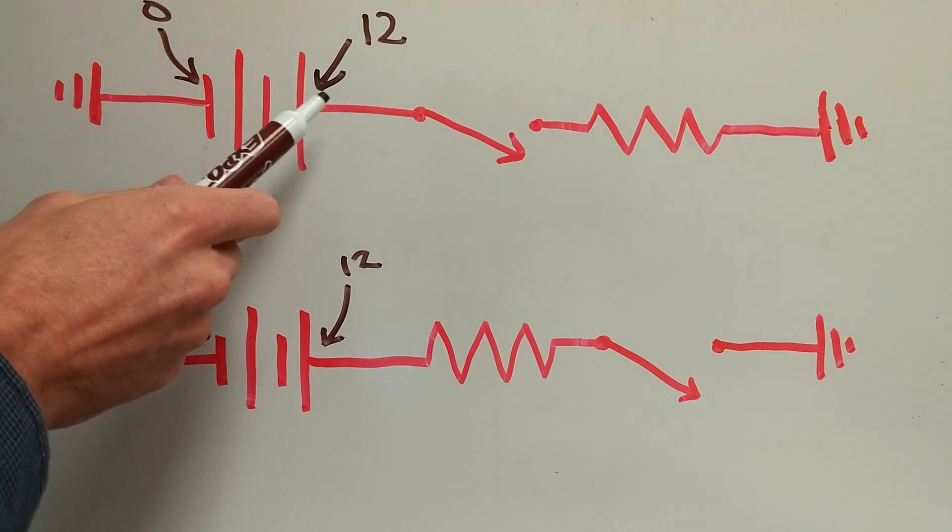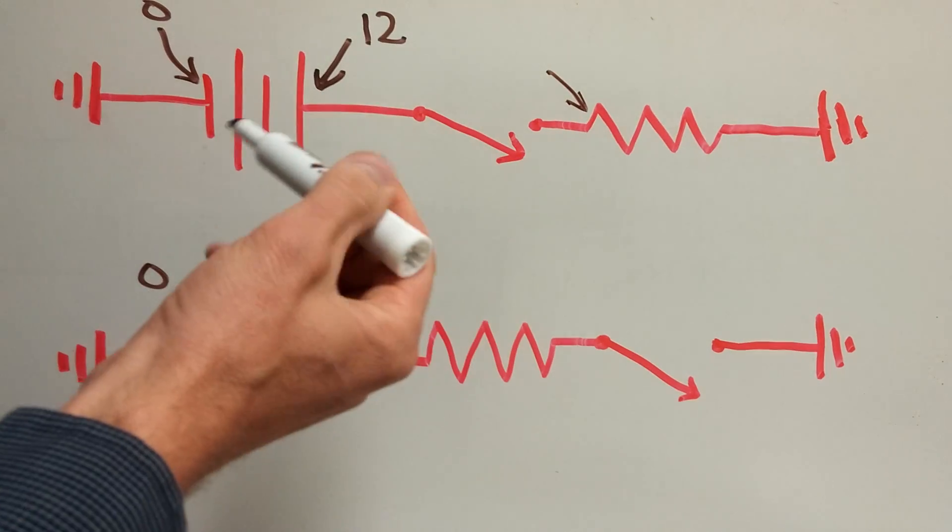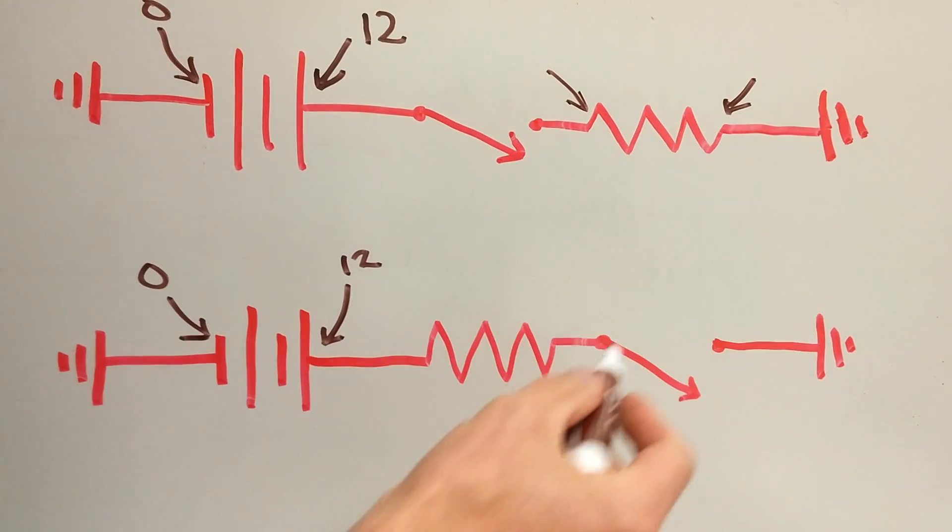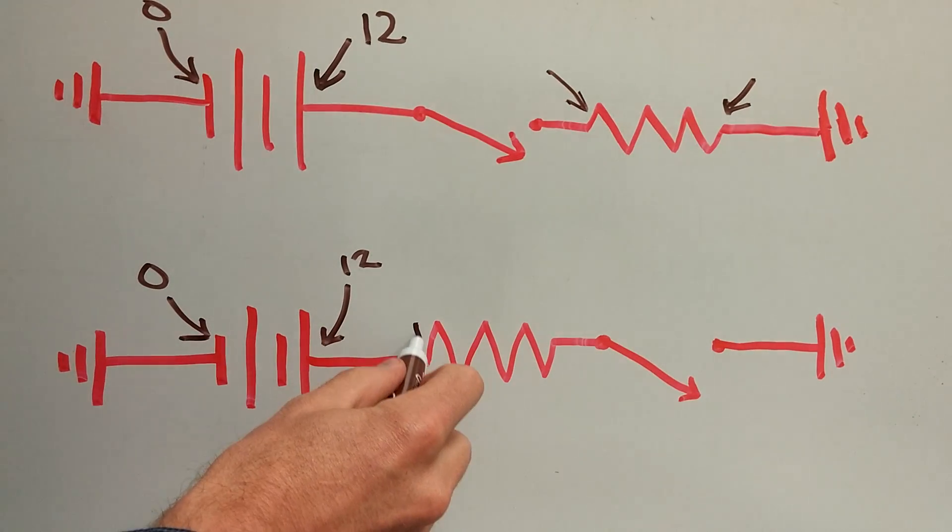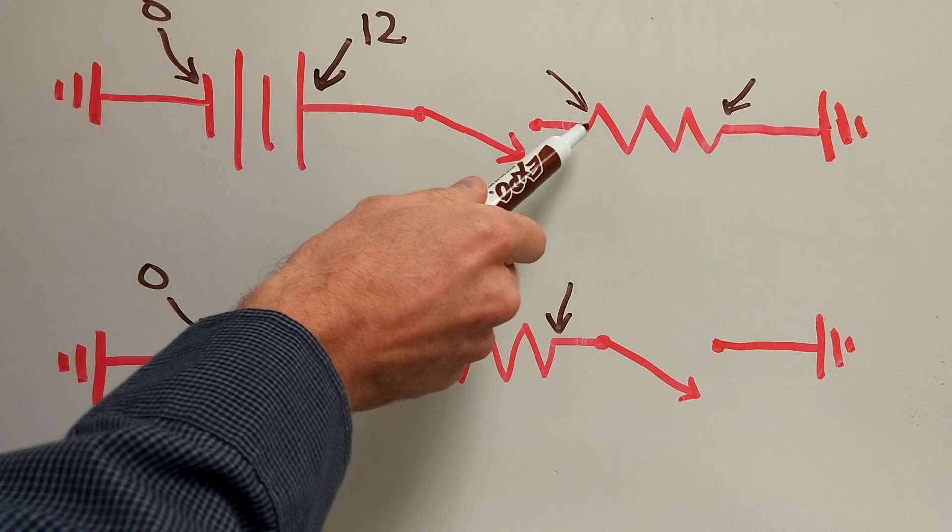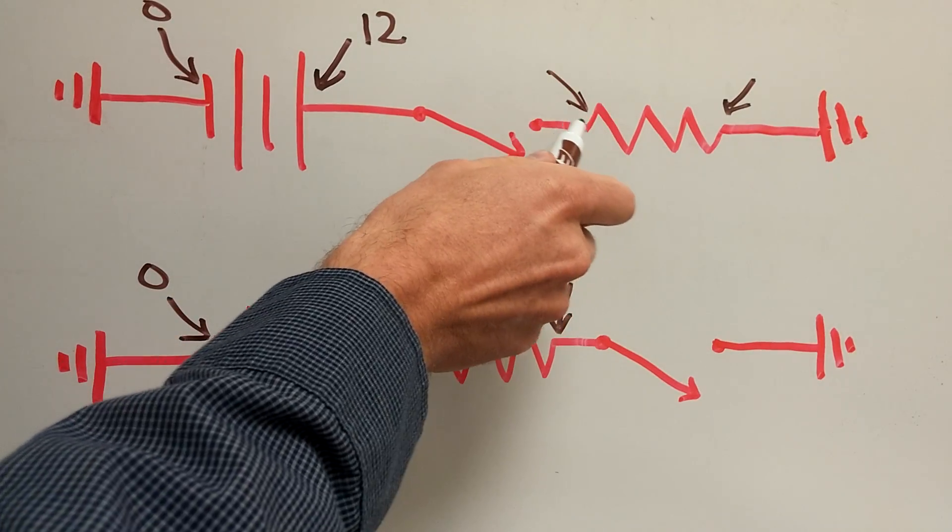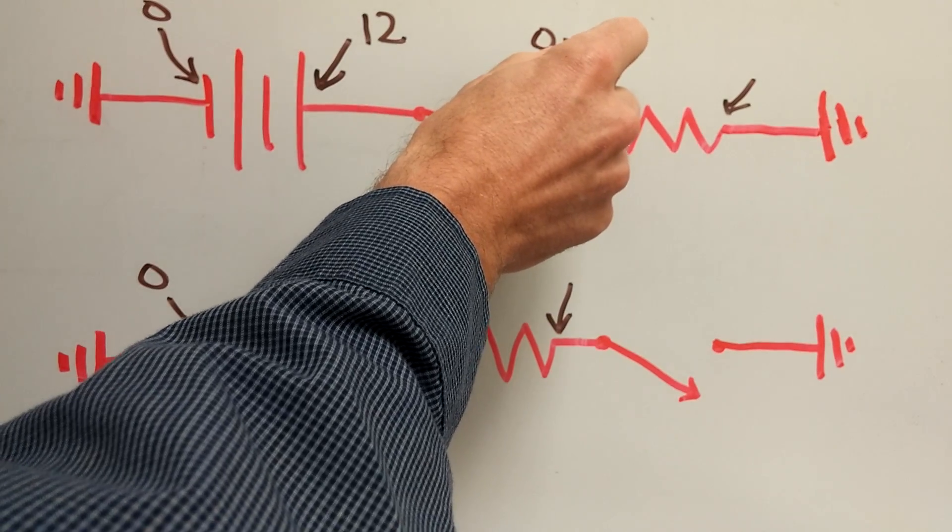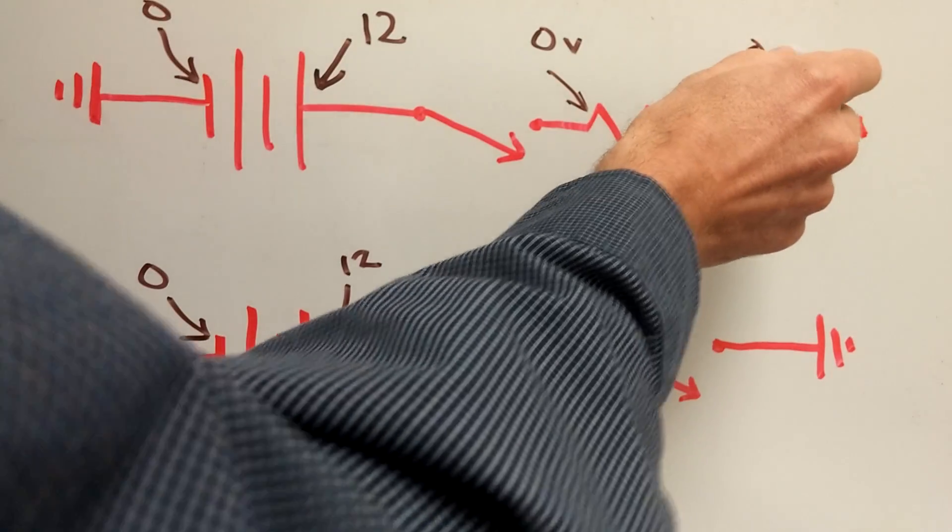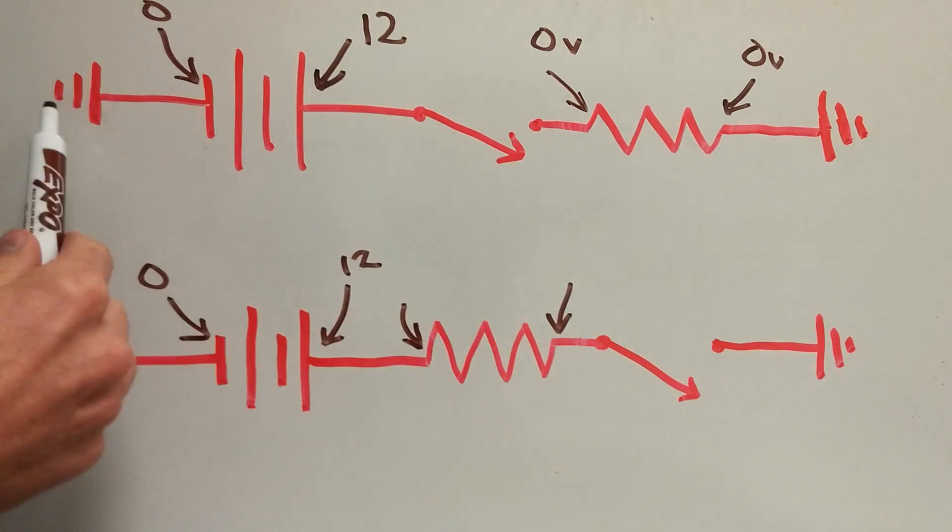Now what changes is I would come over here and I would say, well what about right here? This is the power side of the resistor and this is the ground side of the resistor. This is also the power side of the resistor and this is the ground side. So if I came when the switch was open and measured voltage right here at this point, I would actually find 0 volts and I would come over here and I would find 0 volts. And the reason is because it's connected to the negative side of the battery, it's grounded.